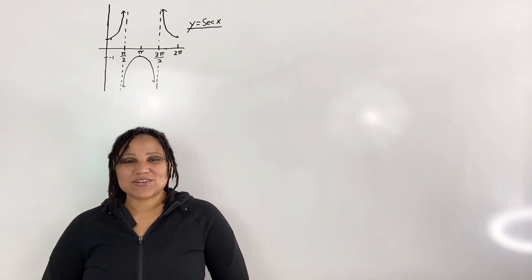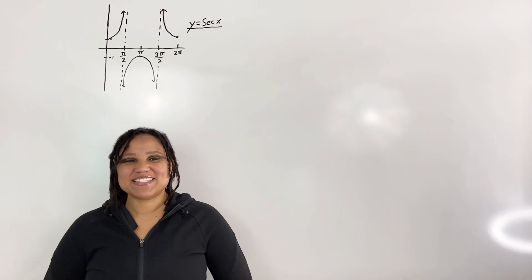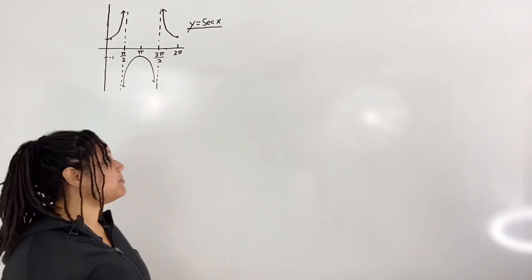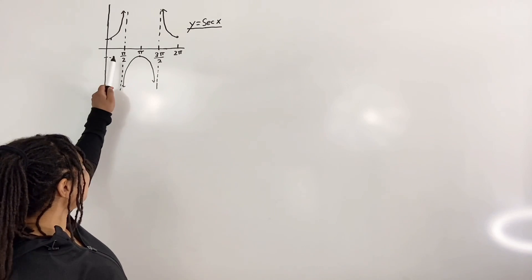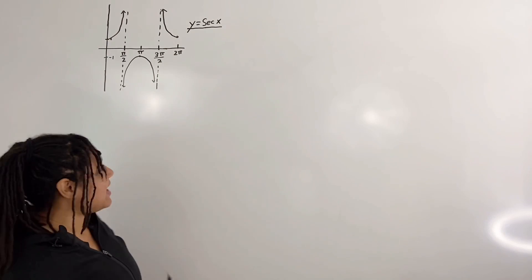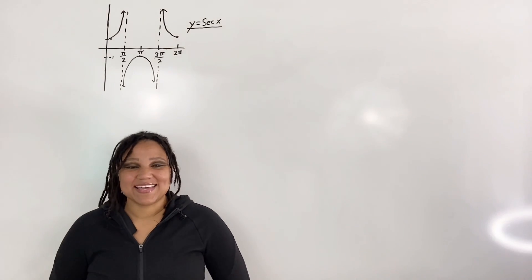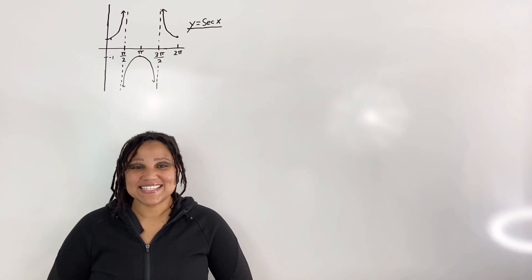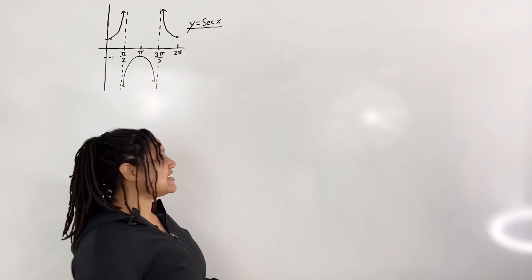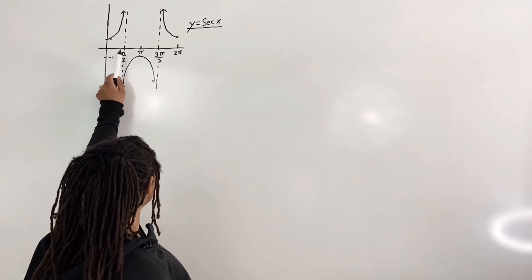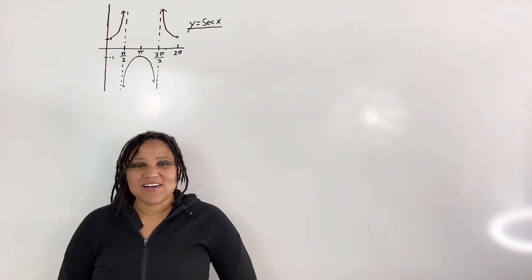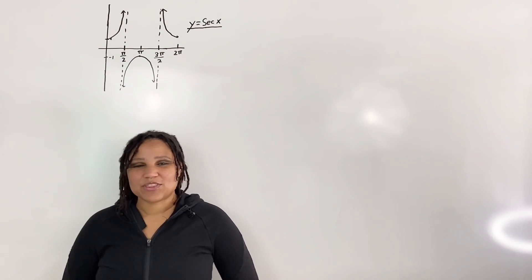It fails the horizontal line test, but mathematicians are clever. Mathematicians decided to restrict the domain from zero to pi over two, but not actually including pi over two, and from pi over two to pi. In this way the graph passes the horizontal line test and thus secant has an inverse. So we restrict the domain from zero to pi over two union pi over two to pi.